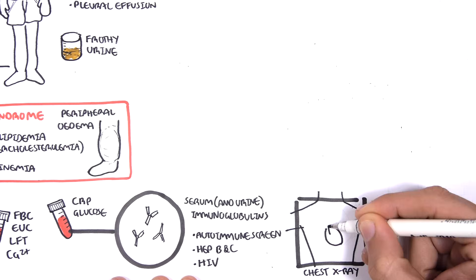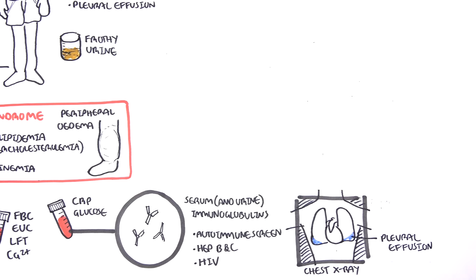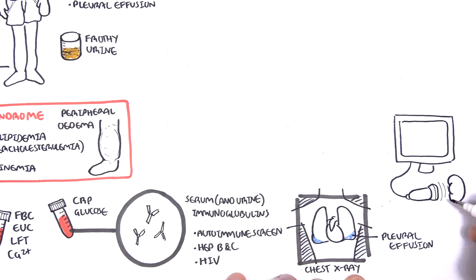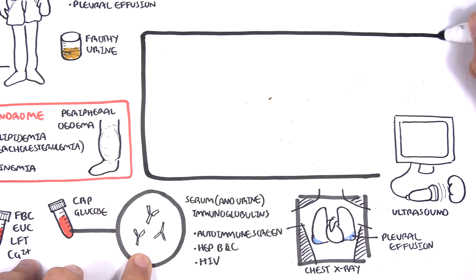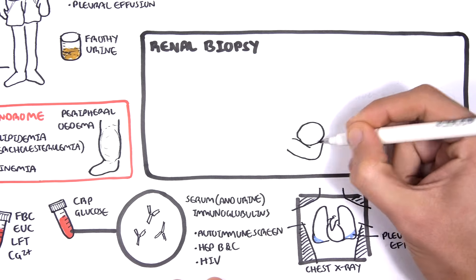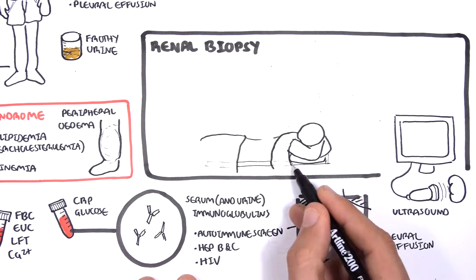Chest x-rays can be performed and may show pleural effusion or edema. Other important investigations include ultrasound of the kidneys and renal biopsy.